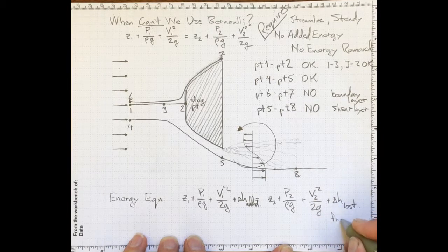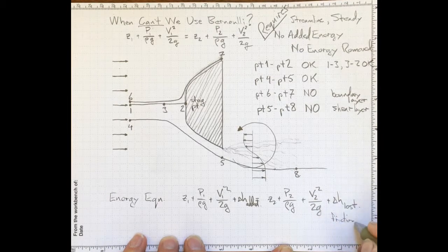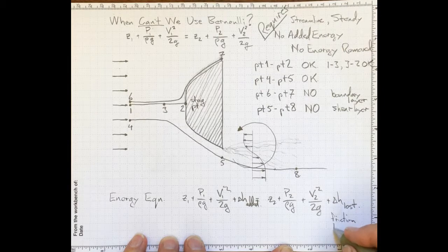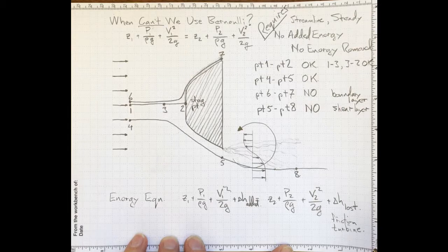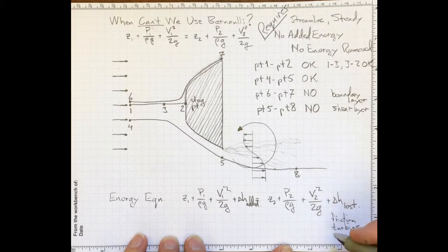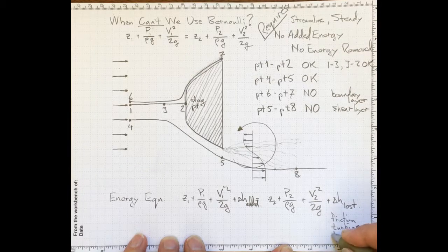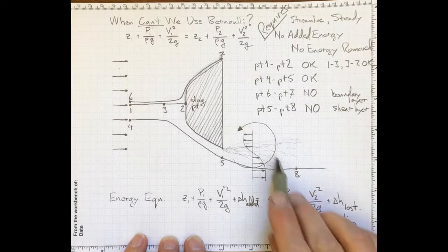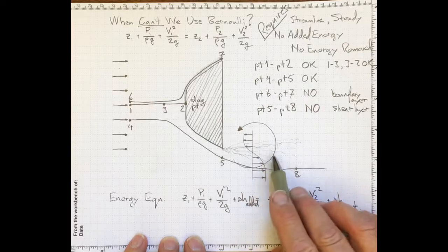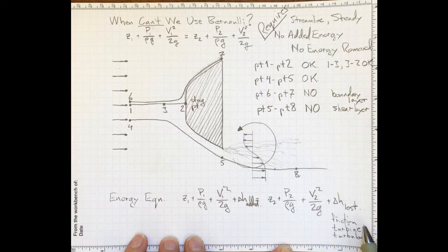This would include friction. It might include useful work taken out by a turbine. Or it might be totally disorganized work, energy taken out by turbulence. That's what's happening in here is we're taking energy out of the flow in this swirling motion.